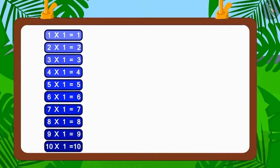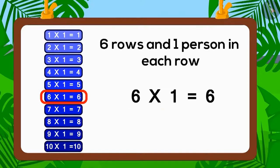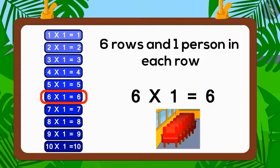Does number six appear in the table of one? Yes, six multiplied by one is six. Therefore, six people can sit in this bus in six rows with one person sitting in each row.